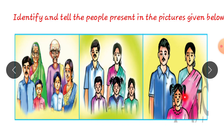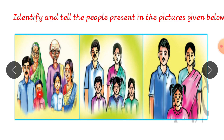Children, observe this picture. There are three families here. In the first family there are six members: Grandma, Grandpa, Father, Mother, and they have two children — one son and one daughter.